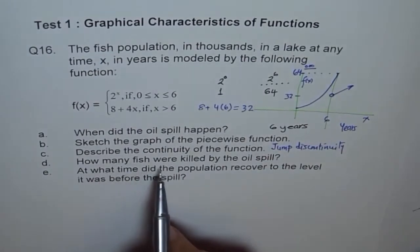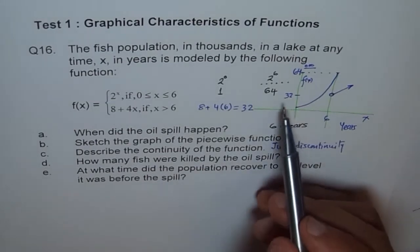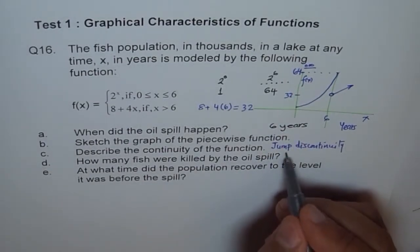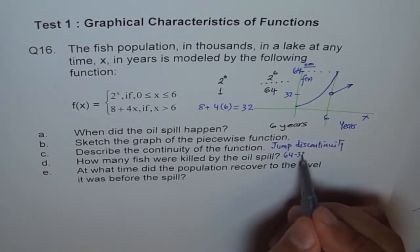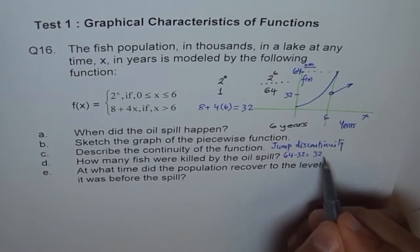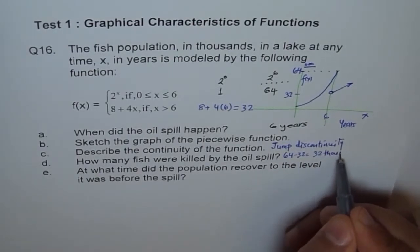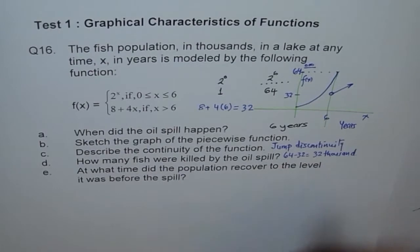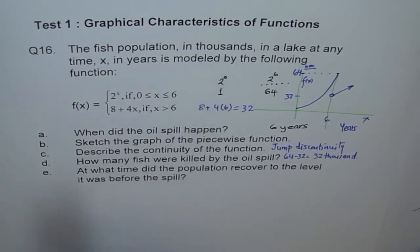How many fish were killed by the oil spill? You can see 64 minus 32, so it is 32,000. That's how this comes into picture.